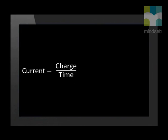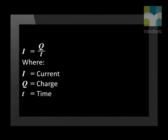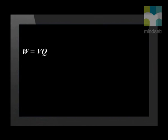We also know that current through a circuit element is the rate of flow of charge. We can express this mathematically as I equals Q divided by T, where I stands for current, Q for charge, and T for time. If we now combine these two equations, we can get a new equation for work. Since W equals V times Q, and Q equals I times T, we see that W equals V times I times T.